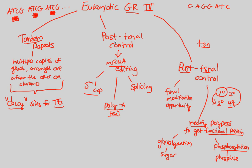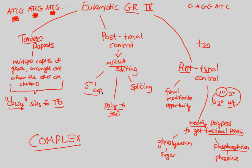We've now completed eukaryotic gene regulation, with one more flowchart to go in this series. Eukaryotic gene regulation is very complex — much more so than in our prokaryotic ancestors — simply because of multicellularity, specialization, and great organization. All of these complex components need to be highly regulated and held in check. This gene regulation is what allows specialization, differentiation, and ultimately what allows us to be as complex as we are compared to a prokaryote. We'll conclude with the final flowchart in the next video.